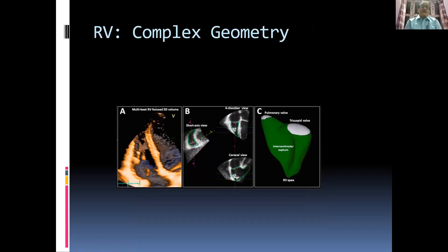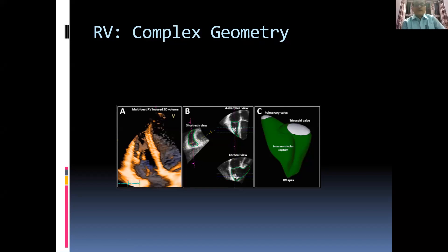The right ventricle has a complex geometry. The tricuspid valve inlet and pulmonary valve outlet lie at different planes, and the interventricular septum is not flat — it is concave on one side and convex on the other, giving the right ventricle a crescent shape. It is convex towards the right ventricle and concave towards the left ventricle.